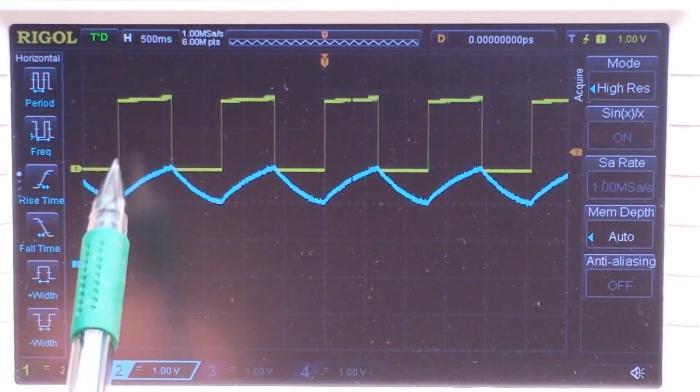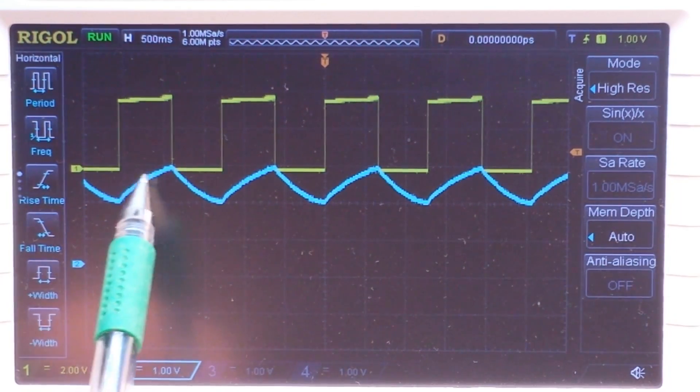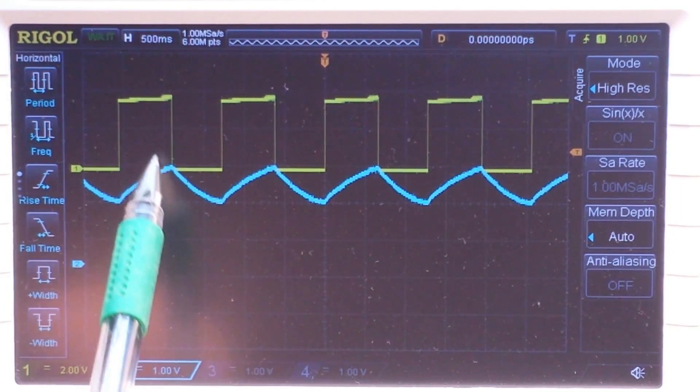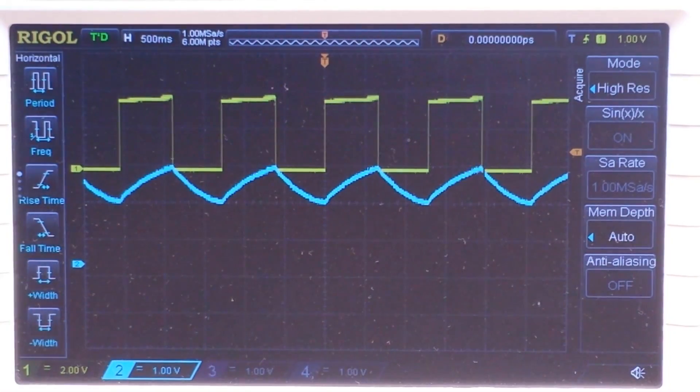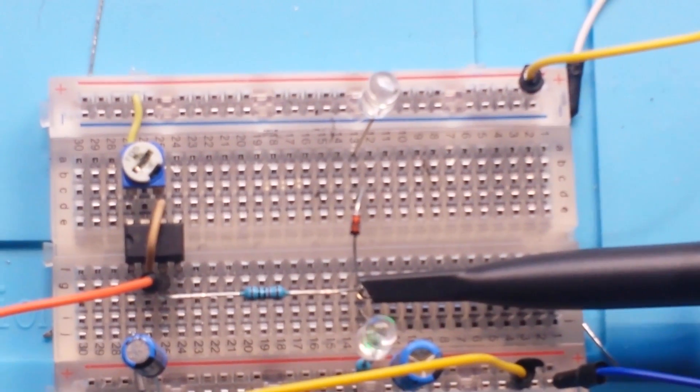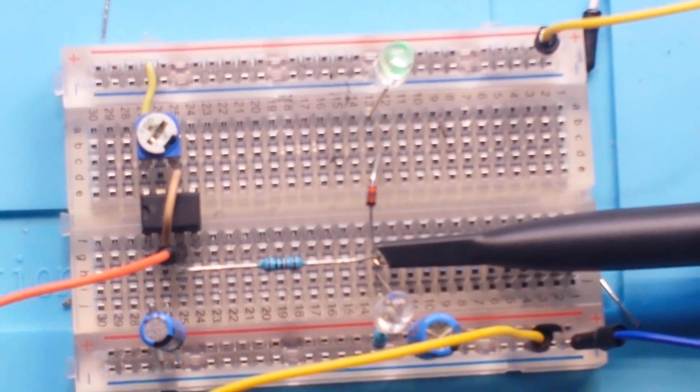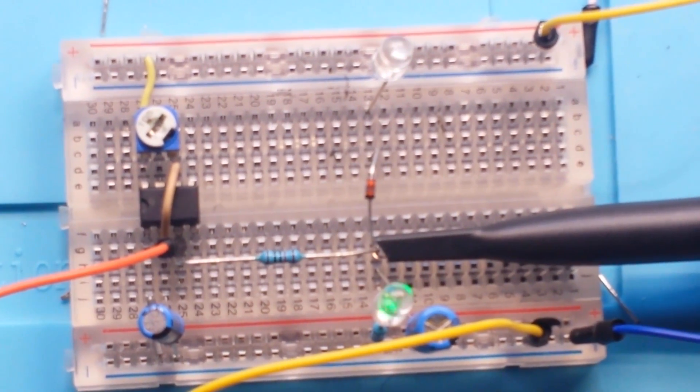You can see as the square wave is high, the capacitor charges. And as the square wave drops off, the capacitor discharges. And when we come down and we look at our circuit, we get the fading LEDs.